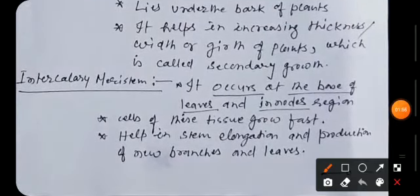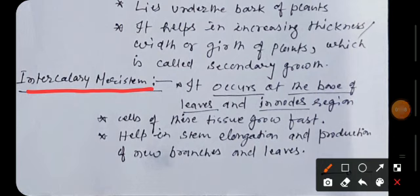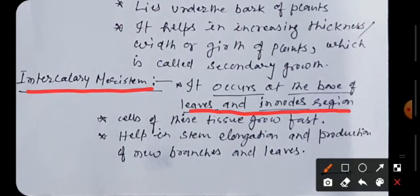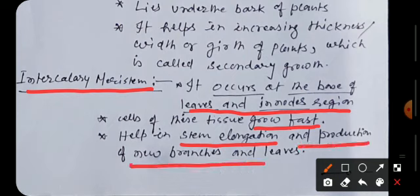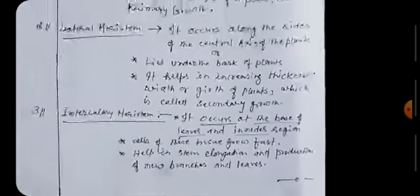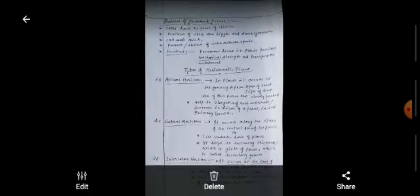The third type of meristematic tissue is the intercalary meristem which occurs at the base of leaves and internode region nearby the nodes and the internode. The cells of this tissue grow very fast which help in stem elongation and production of new branches and leaves which is also known as the differentiation process. This way intercalary is involved in production of various parts in plants.